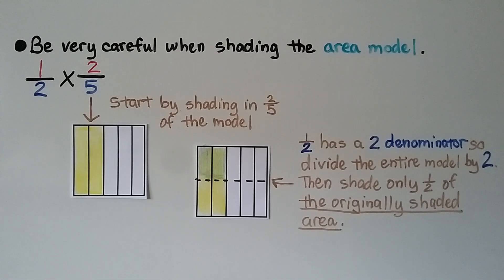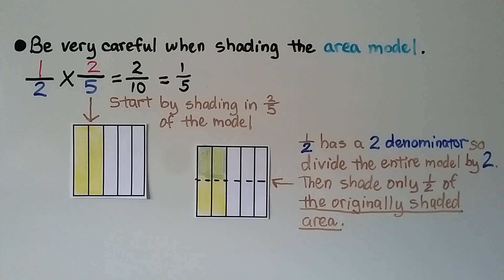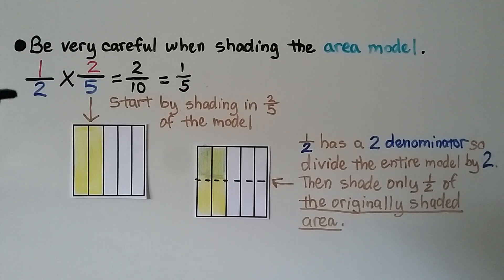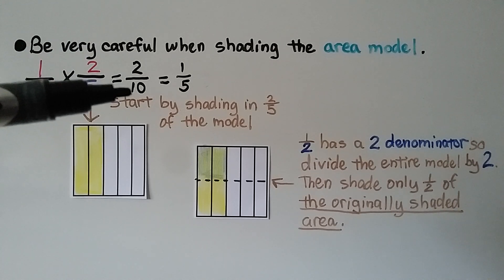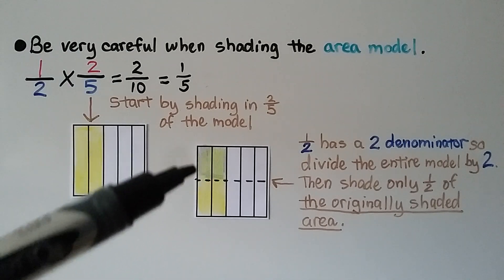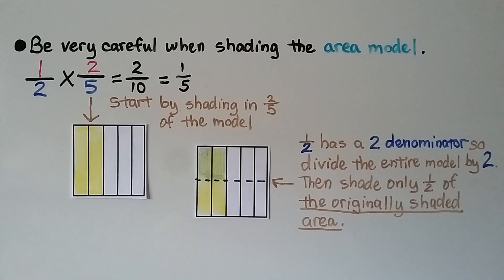We get two of ten parts. Going straight across the numerator, one times two is two; going straight across the denominator, two times five is ten. That gives us two-tenths, which simplifies to one-fifth.